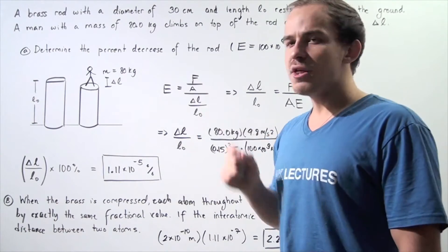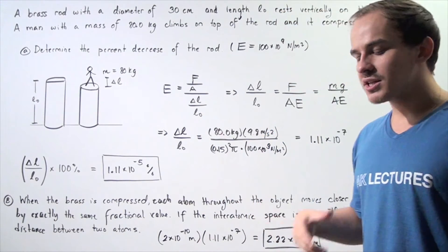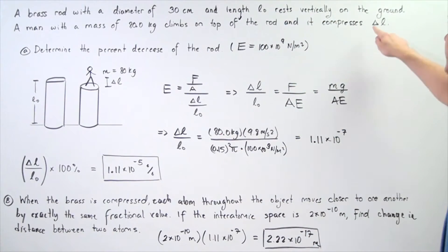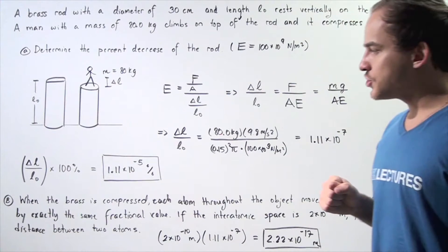Now, a man with a mass of 80 kilograms climbs on top of that rod and the rod compresses a distance of change in L. Now, this example has two parts.